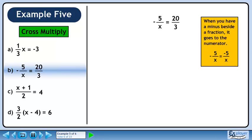When you have a minus beside a fraction, it goes to the numerator. So the original equation can be rewritten with the minus being attached to the 5 in the numerator.